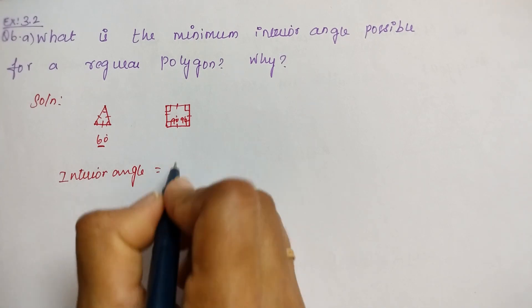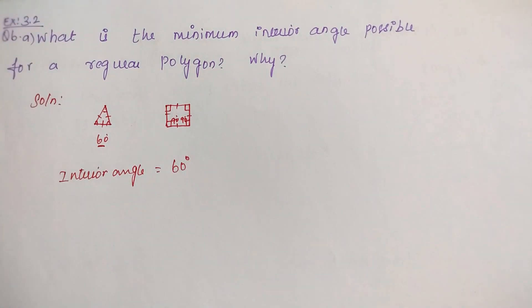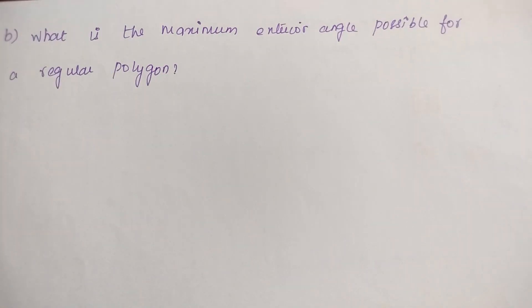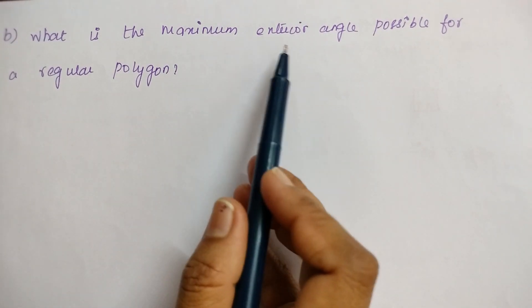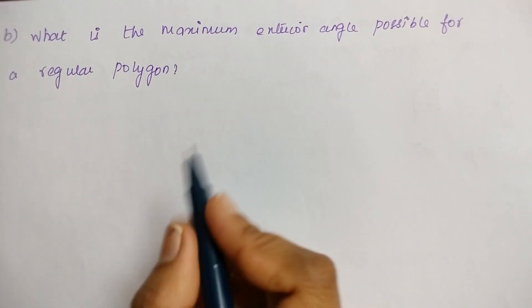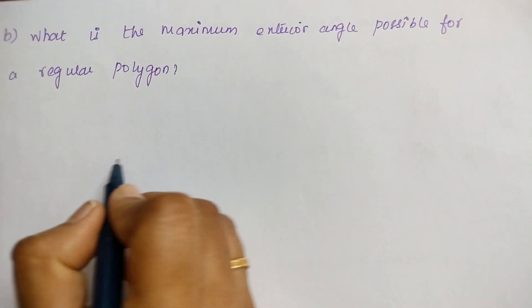So, the minimum interior angle of a regular polygon is 60 degrees. Now the second part of the question: What is the maximum exterior angle possible for a regular polygon?